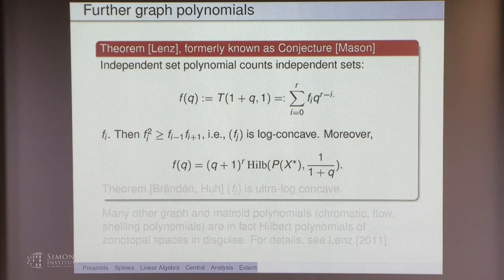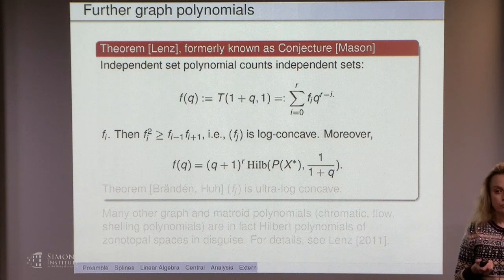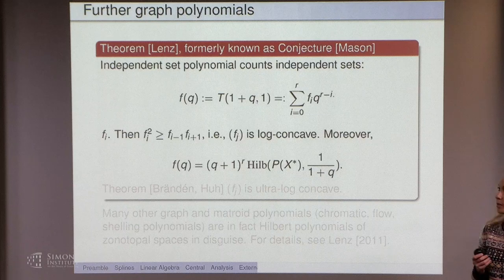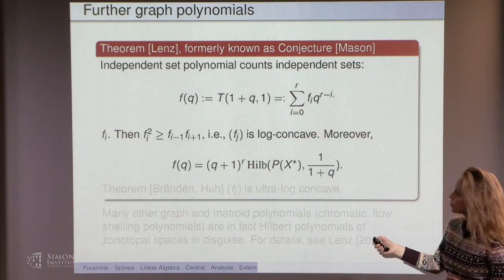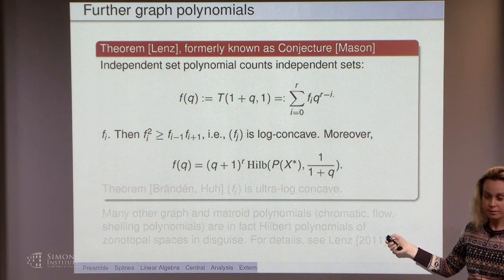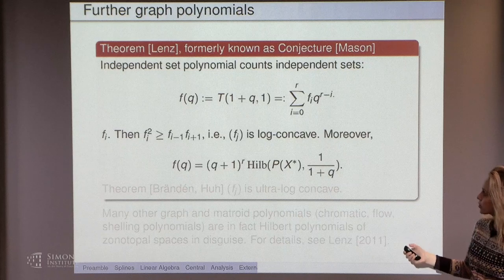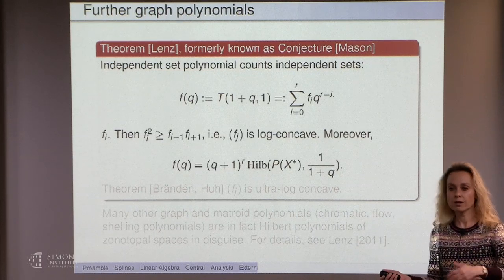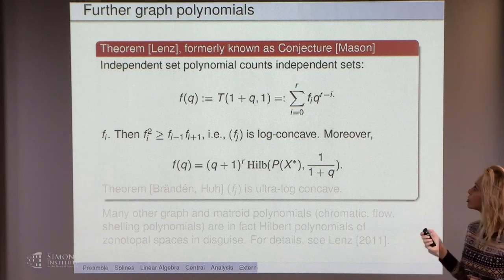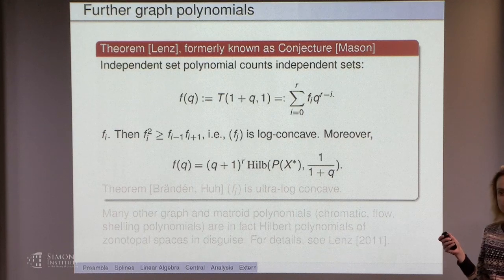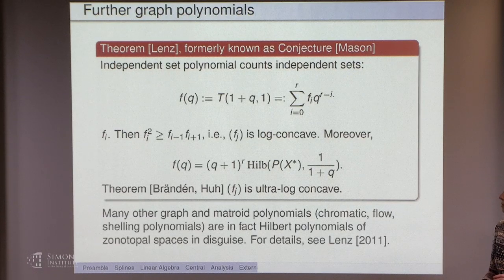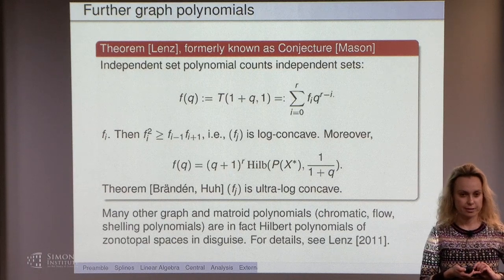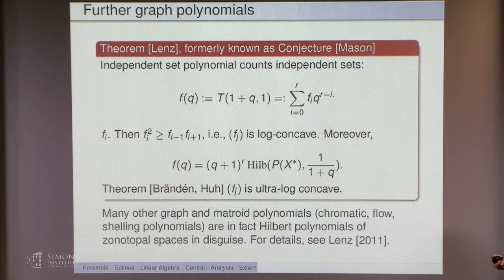Just to mention a few things that have been spectacularly improved: Mason's conjecture concerned the so-called independent set polynomial, which was another specialization of the bivariate Tutte. The coefficients of that were conjectured to be log-concave and even ultra-log-concave. All of this turned out to be true. Matthias Lenz established log-concavity based on the characteristic polynomial results of Huh and Katz. And now, of course, we just learned that this sequence is also ultra-log-concave, which is very exciting.